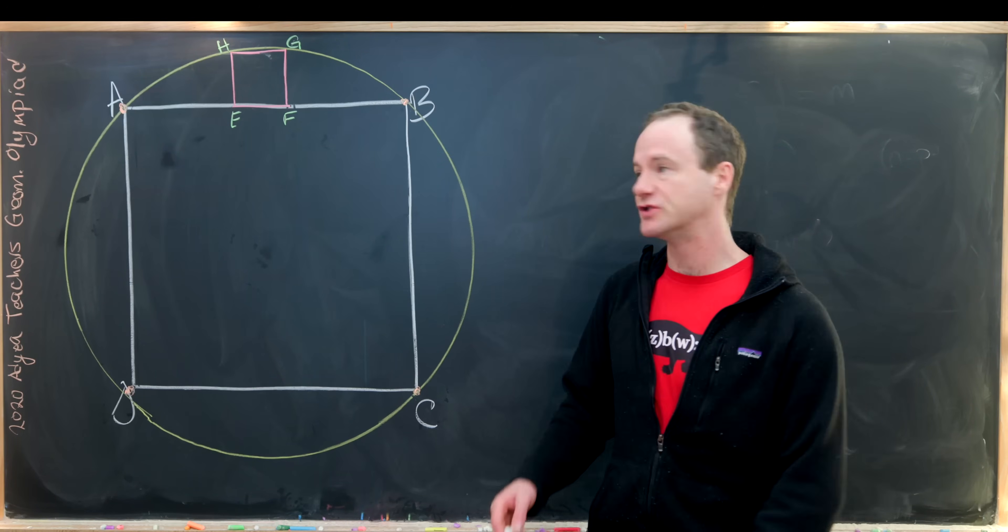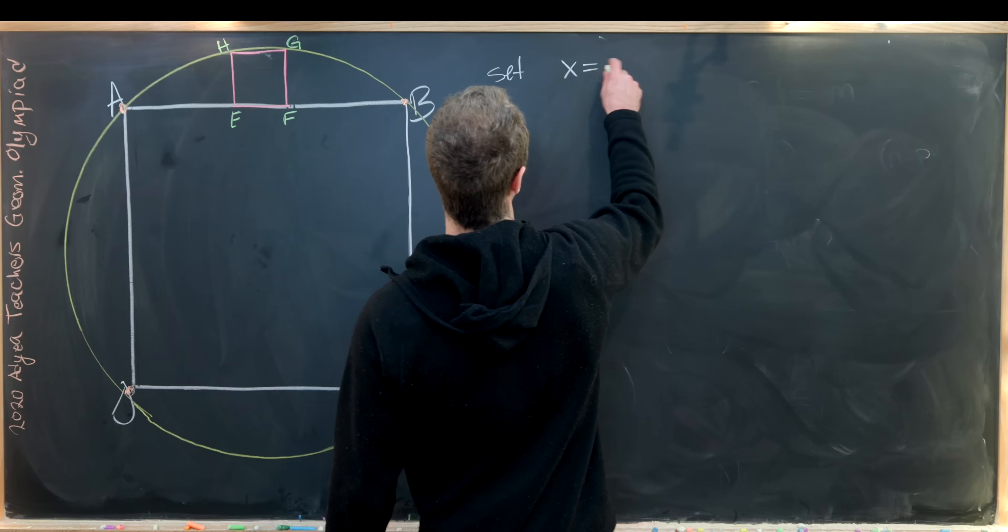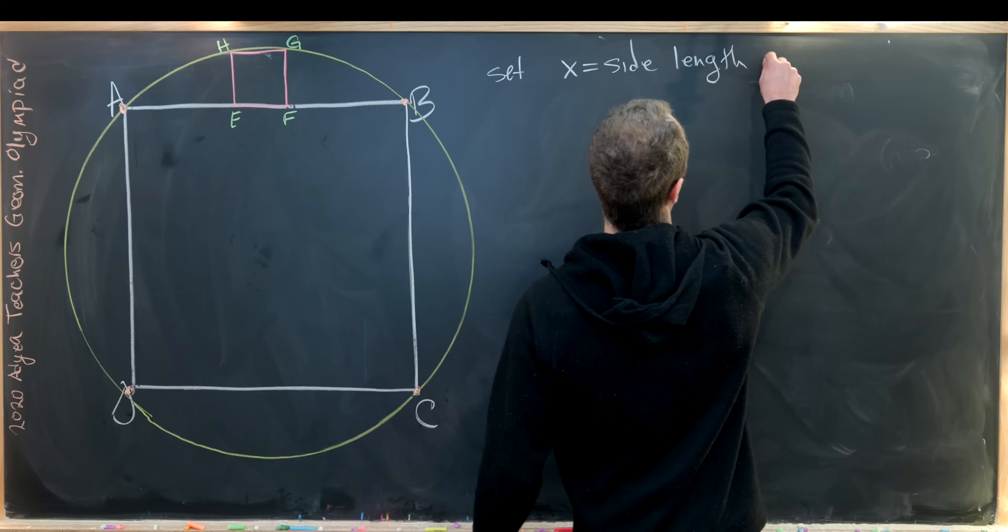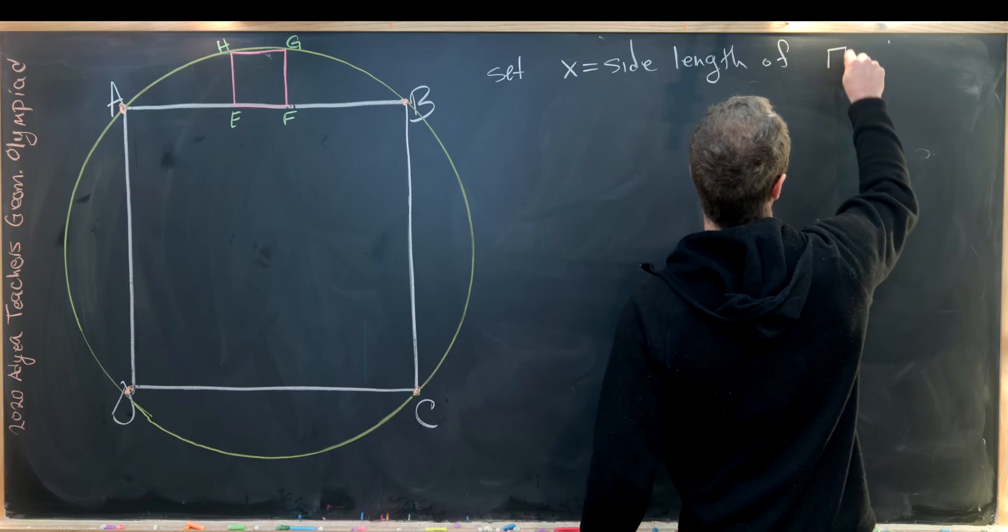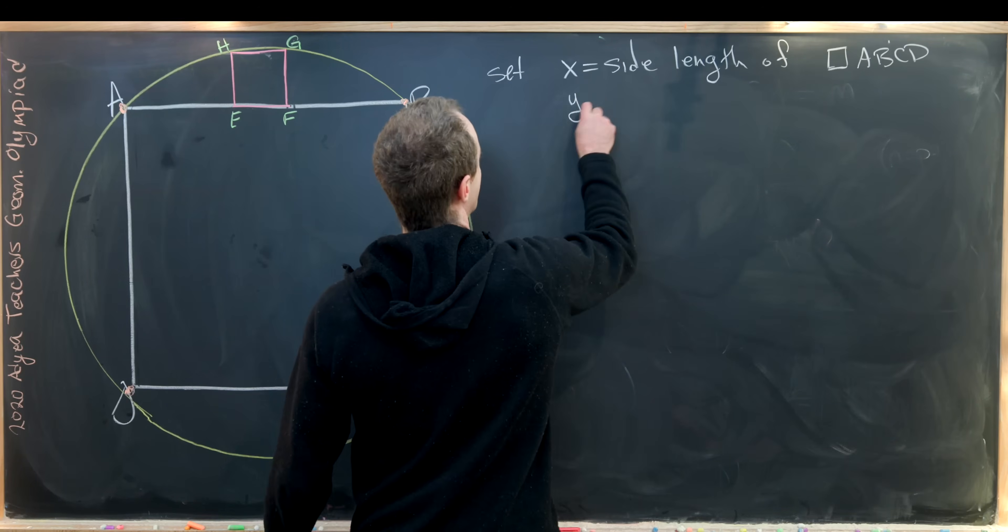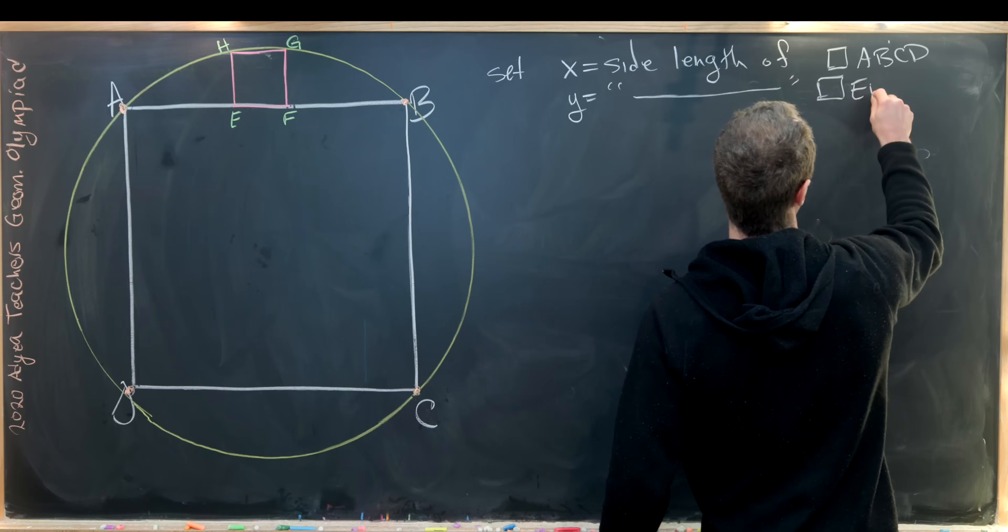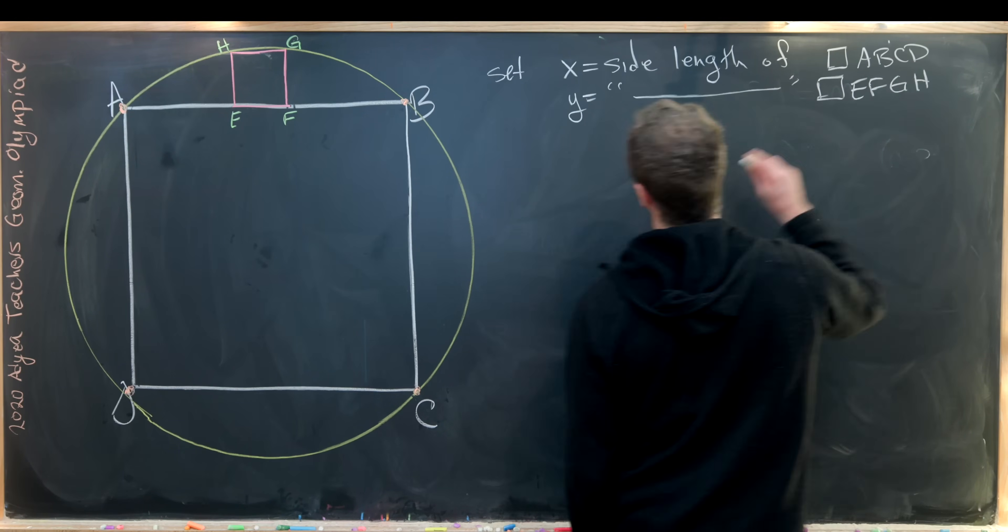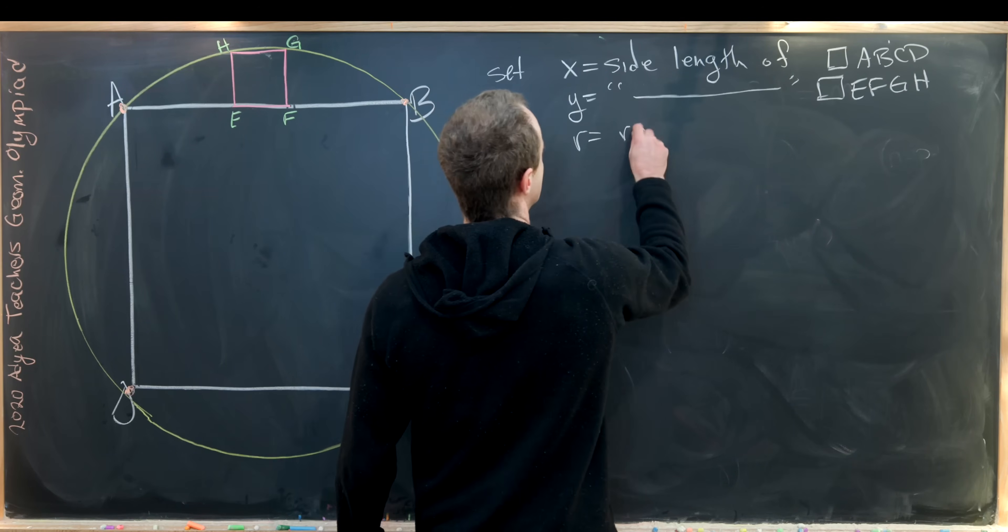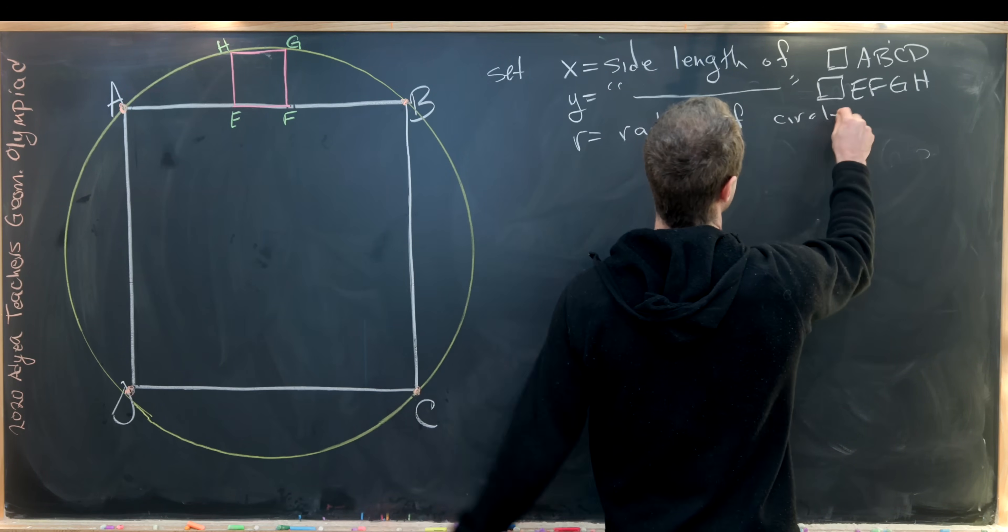I'll start by introducing some notation. So let's set X equal the side length of square ABCD. And we'll set Y equal to the side length of square EFGH. And then we'll set R equal to the radius of the circle which is in this picture.